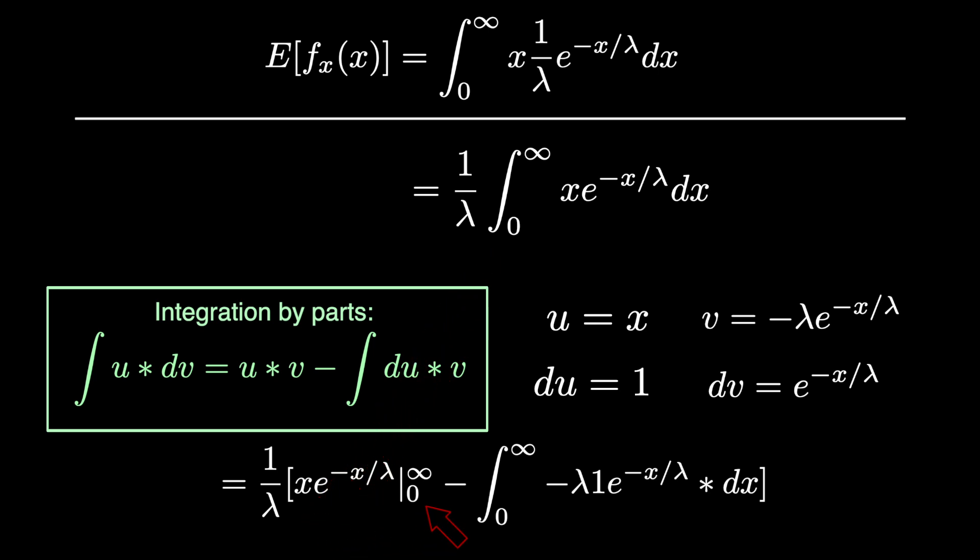This symbol here means that we're going to have to plug in at infinity and subtract that from zero, but we're not going to worry about that for now because we're going to get all of the calculus out of the way first and then worry about plugging in everything for simplification.